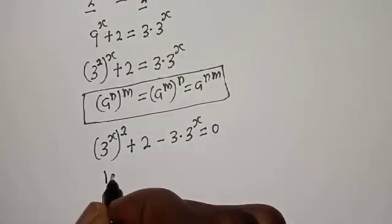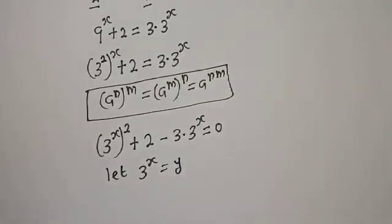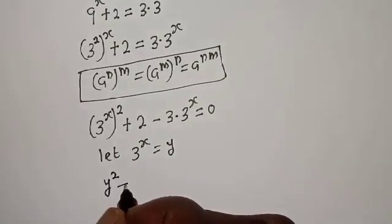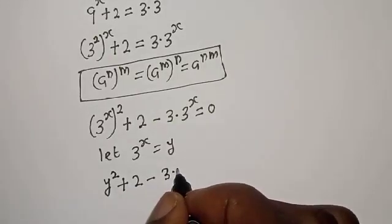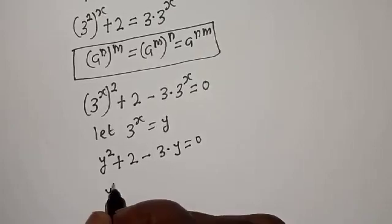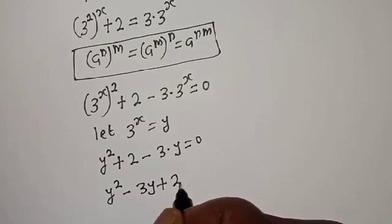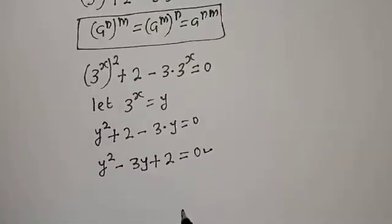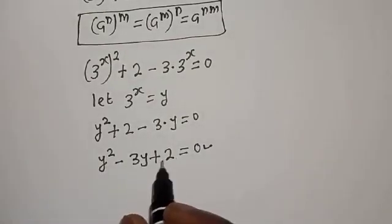Now let 3 raised to power s equal y. Then substituting, we have y squared plus 2 minus 3 multiplied by y is equal to 0, which gives y squared minus 3y plus 2 is equal to 0. This is a quadratic equation which can be solved using the quadratic formula or factorization method.